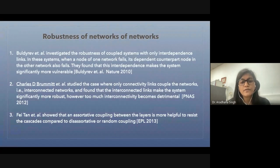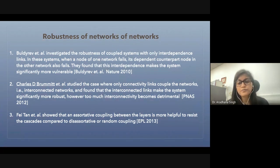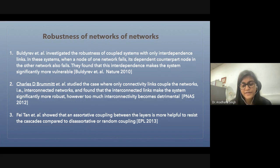The robustness of networks of networks has been studied and it has been shown that they are really very fragile compared to isolated networks because of the dependency links. If this dependency is assortative, it could actually be helpful for robustness, whereas if it is disassortative, it would be really bad for the robustness of the networks.